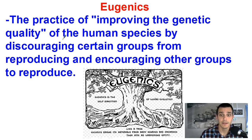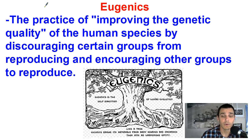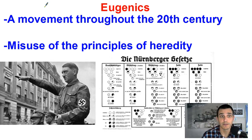The idea was this kind of pseudoscience where you take the best of the best and try to produce more. The byproduct of that, of course, is that you're going to be discriminating against what is perceived as a lesser genetic group.